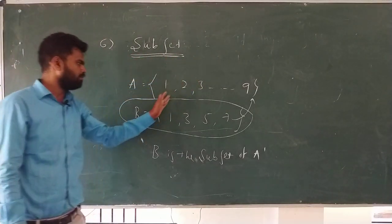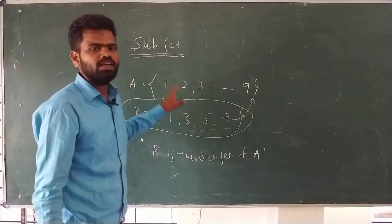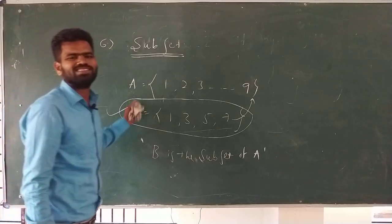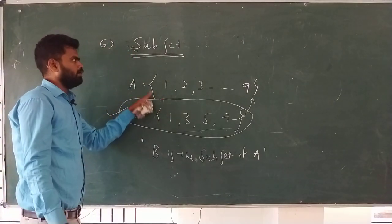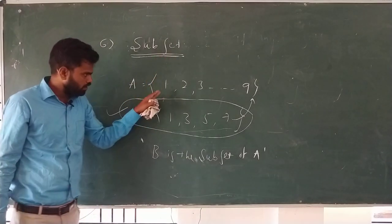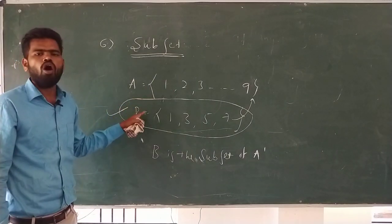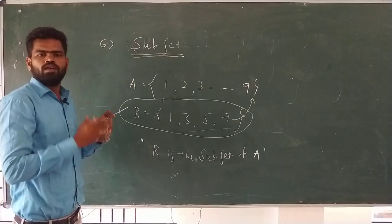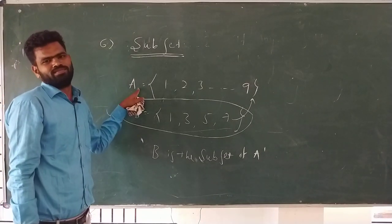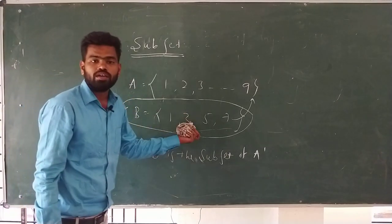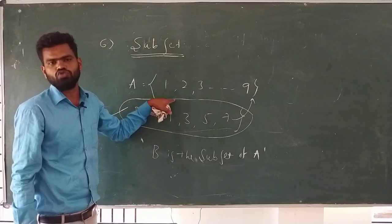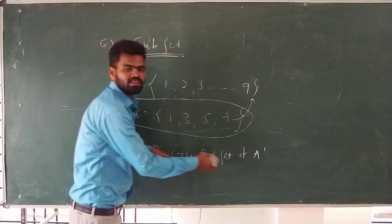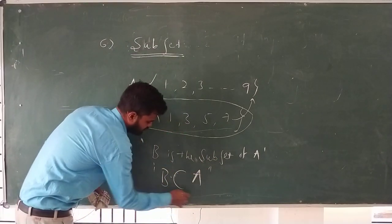The definition of subset: if A and B are any two sets, and all the elements of set B belong to set A, then B is called a subset of A. This is denoted by B ⊆ A. This symbol represents subset.